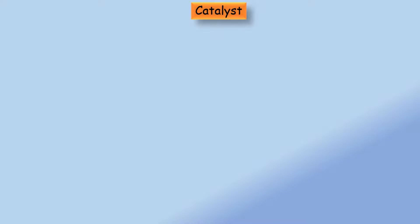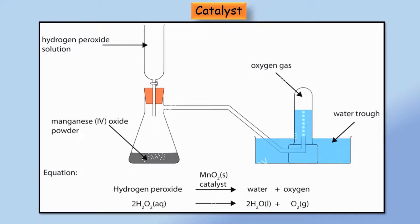Here is one more reaction in which a catalyst is used to increase the rate. The decomposition of hydrogen peroxide into water and oxygen gas takes place slowly at room temperature. But the same reaction occurs at a faster rate on adding manganese dioxide powder. Here, manganese dioxide powder acts as a catalyst, which increases the rate of reaction without taking part in the reaction itself.